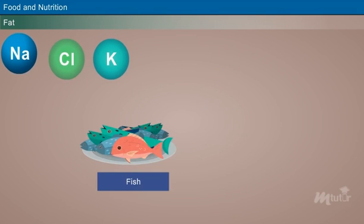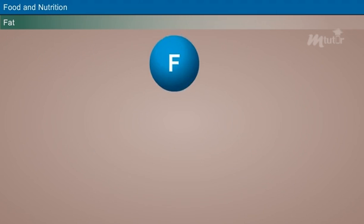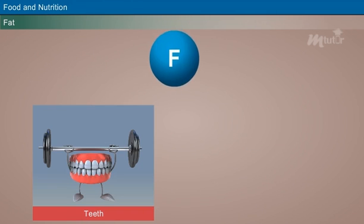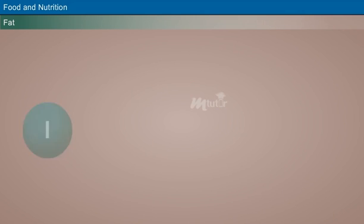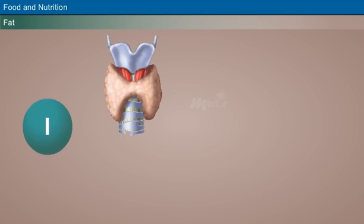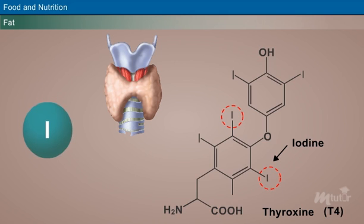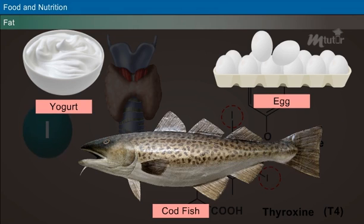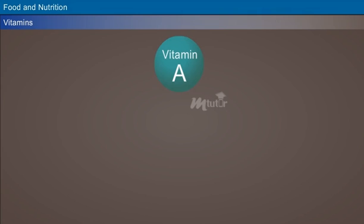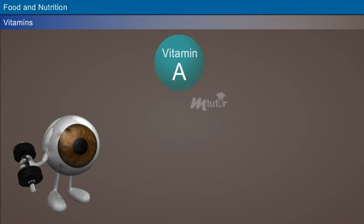Sodium, fluorine, and potassium: these minerals are required to maintain body fluids in appropriate concentration, and are present in fish and meat. Fluorine: it is important for strengthening the teeth, and is present in marine fishes. Iodine: it is required for the synthesis of thyroxine hormone, and is present in yogurt, egg, and codfish.